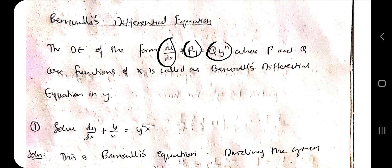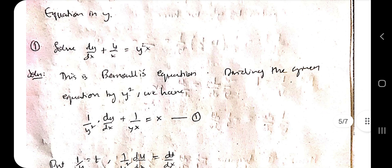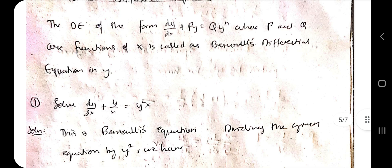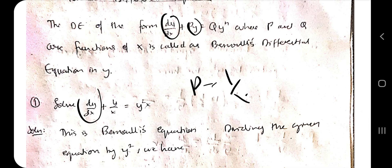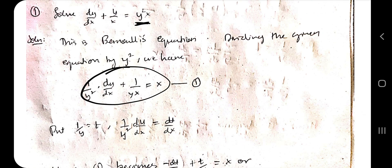The last topic is Bernoulli's differential equation. If the equation is of the form dy/dx plus Py equals Q times y-to-the-n, that is Bernoulli's form. For example, dy/dx plus y/x equals y-squared times x — here P equals 1/x and Q equals x, and n equals 2. Since we have y-squared, divide the whole equation by y-squared to reduce it.